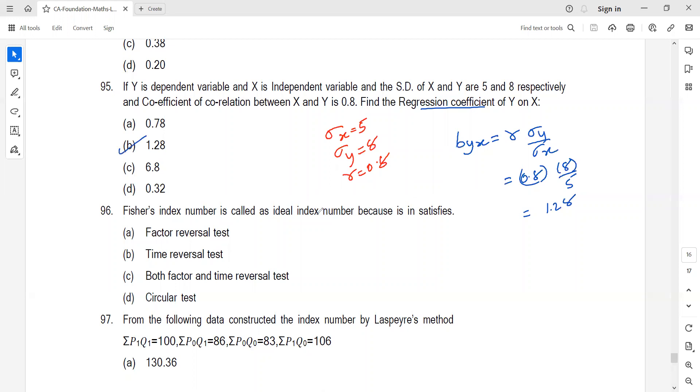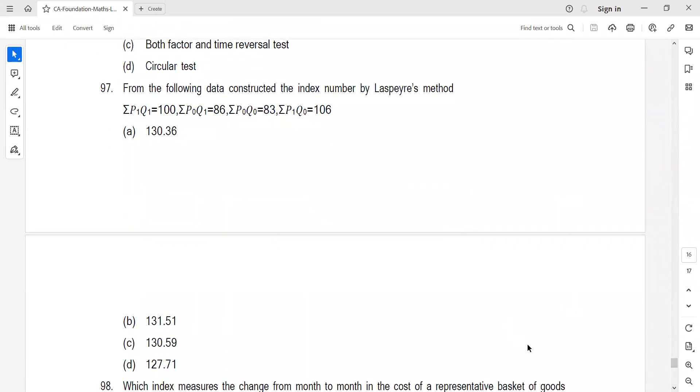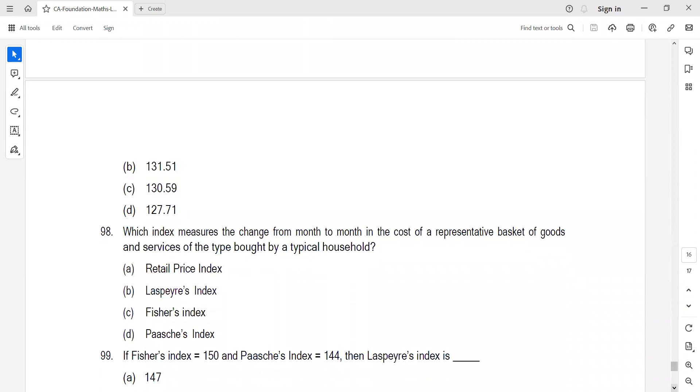Fisher index number is called ideal because it satisfies both factor reversal test and time reversal test. We did this in the module's last question. Question 97: Laspeyres formula is straightforward. Price index of Laspeyres is summation P1 by P0 into Q0, relative importance, into 100. Formula based, you can easily get answer D.